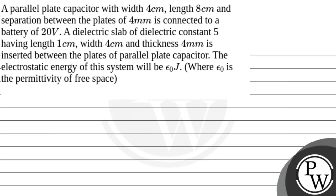Hello, let's read out the question. A parallel plate capacitor with 4 cm length and 8 cm width and 4 mm separation is connected to a battery of 20 volt. A dielectric slab of dielectric constant 5 having length of 4 cm and thickness 4 mm is inserted between the plates of the parallel plate capacitor. The electrostatic energy of this system will be some value times epsilon-naught joules, where epsilon-naught is the permittivity of free space.